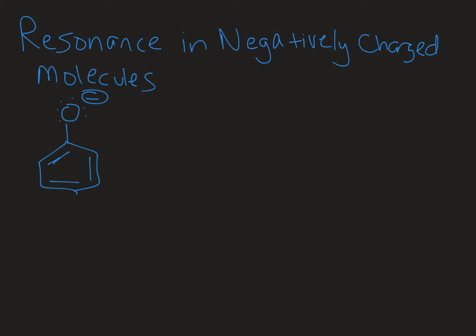Welcome to Chemistry with Caroline. In this video we're going to take a look at how to draw resonance structures and the accompanying arrows to show the movement of electrons for a negatively charged molecule.